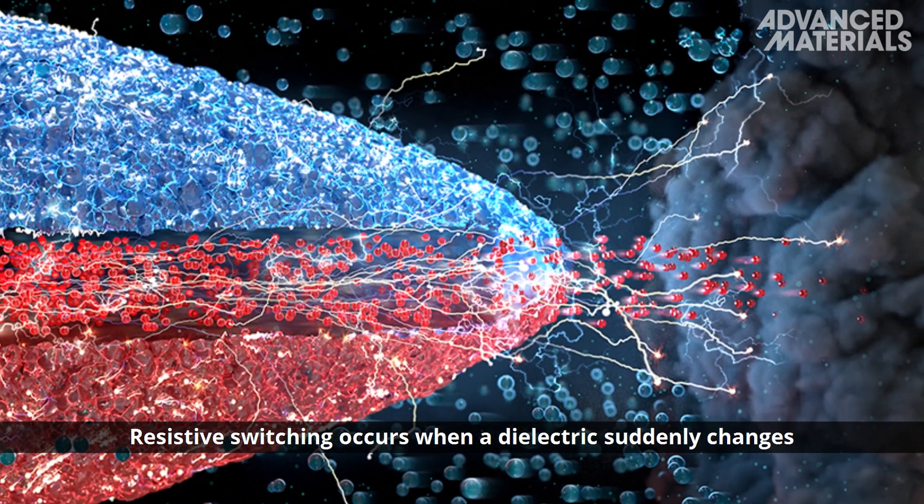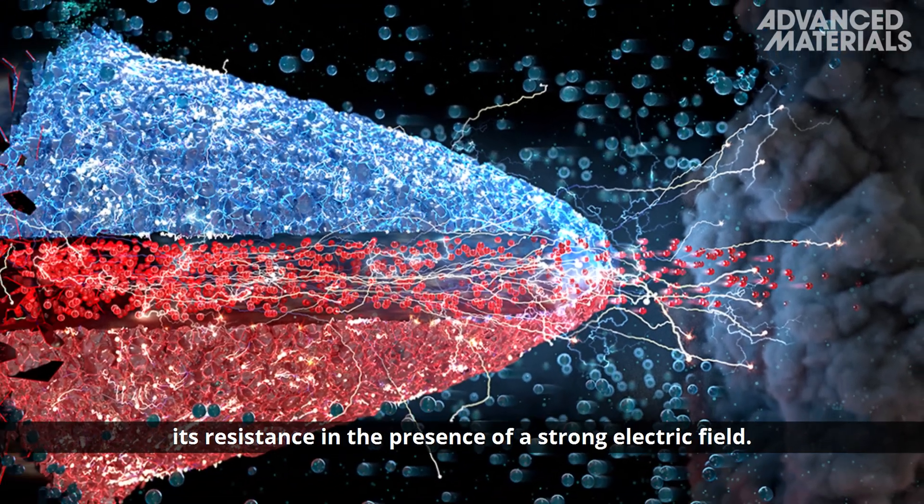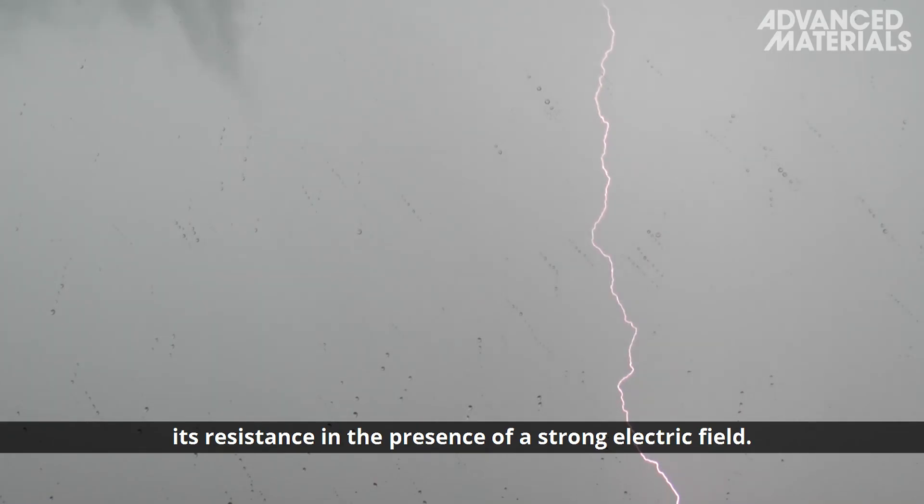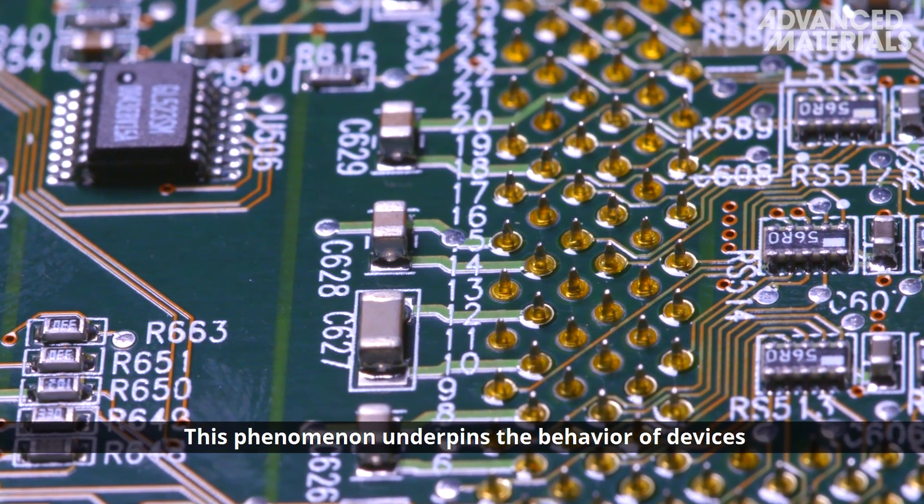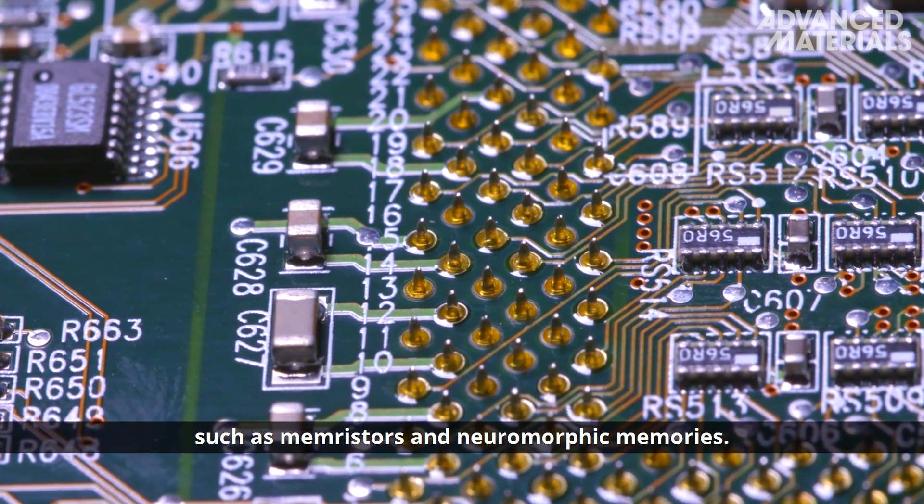Resistive switching occurs when a dielectric suddenly changes its resistance in the presence of a strong electric field. This phenomenon underpins the behavior of devices such as memristors and neuromorphic memories.